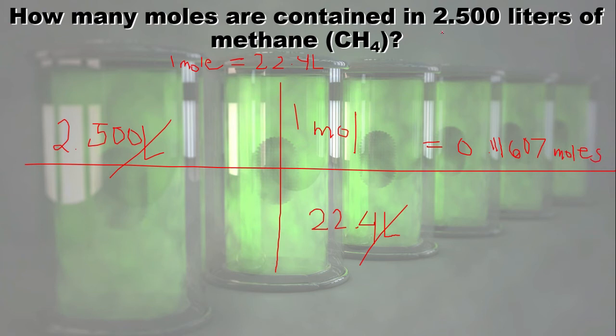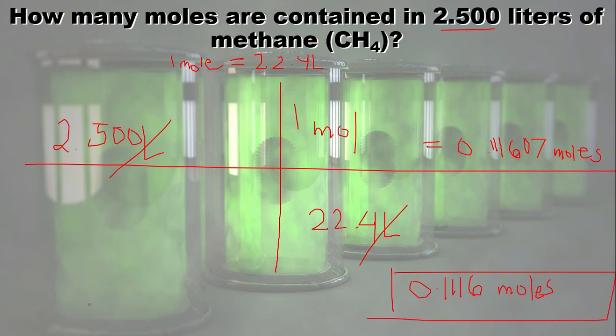Since the given has four significant figures, the answer will be 0.1116 moles. This means that in 2.5 liters of methane, there are 0.1116 moles of methane.